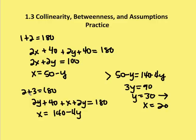Similarly, solving for x using the equations for angles 2 and 3: 2y plus 40 plus x plus 2y equals 180, where 2y plus 40 represents angle 2 and x plus 2y represents angle 3. Subtracting 4y and 40 from both sides, I can simplify to x is equal to 140 minus 4y.